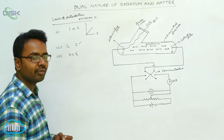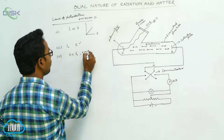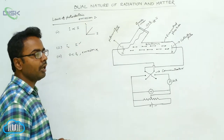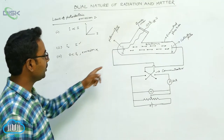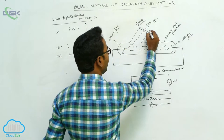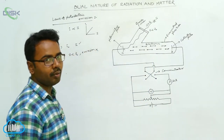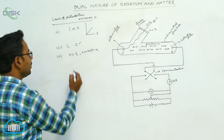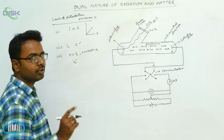The third law is that if the frequency of incident radiation is below the minimum frequency called the threshold frequency, photoelectric emission is not possible. No electrons are emitted if the frequency ν is less than the threshold frequency ν₀. In such a case, no electron is emitted and photoelectric emission is not possible.